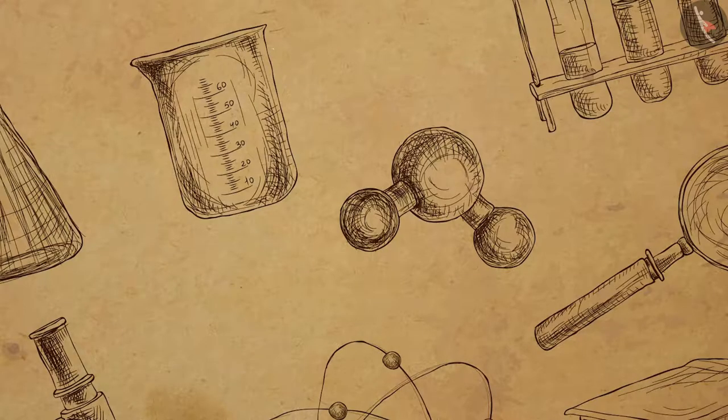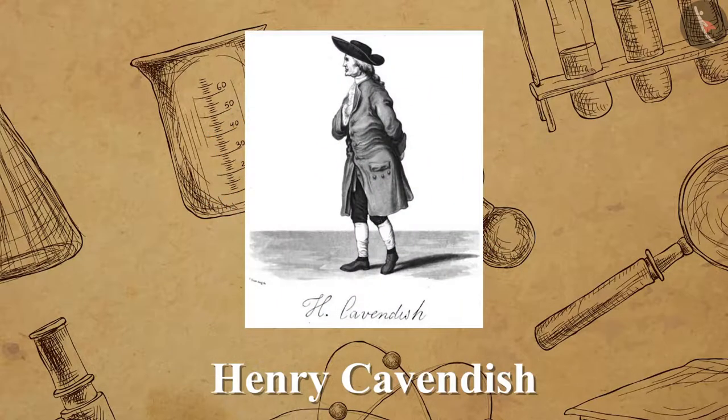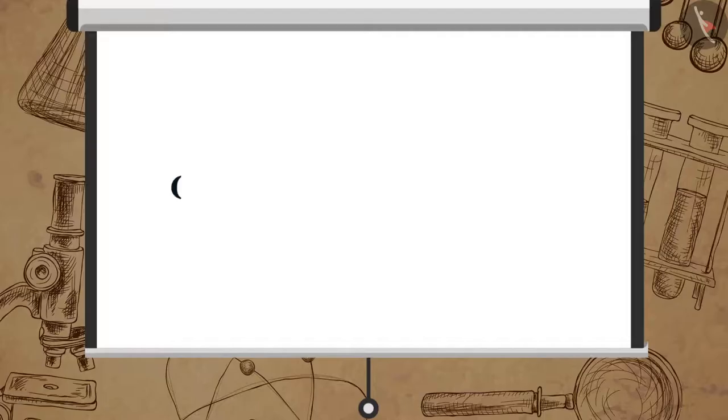The value of universal gravitation constant G was calculated by Henry Cavendish. He used a sensitive balance to do so. The accepted value of G is equal to 6.673 multiplied by 10 raised to minus 11 Newton meter square per kilogram square.